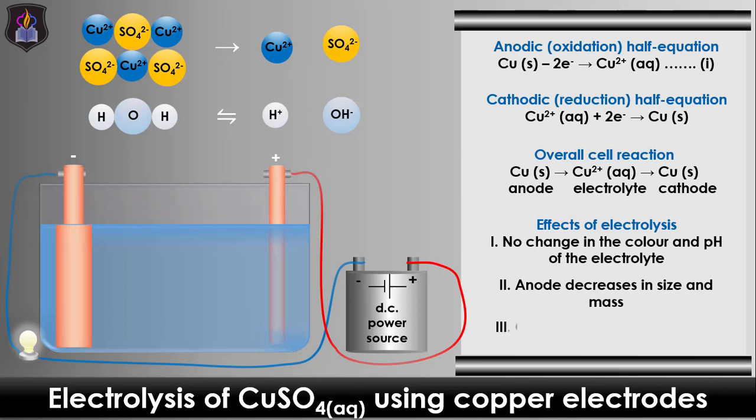while the deposition of the metallic copper at the cathode makes it increase in size and mass. As stated at the beginning, the principle behind electrolysis of copper(II) sulfate using copper electrodes is applied in the purification of metals and electroplating.